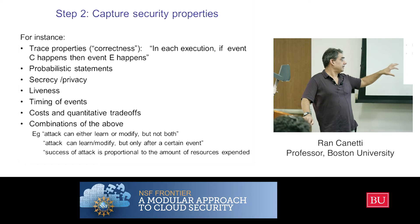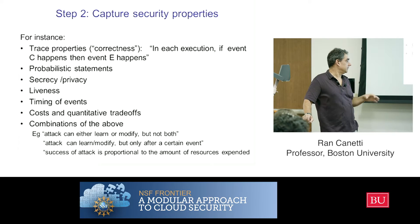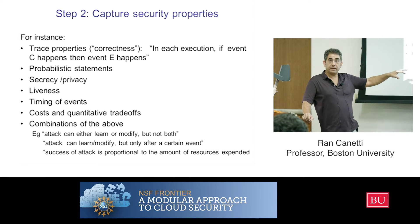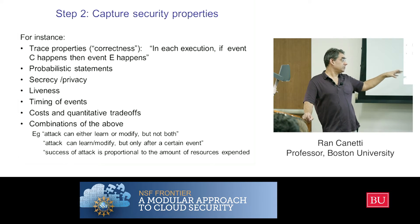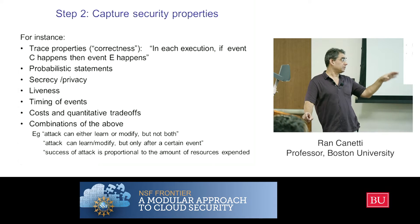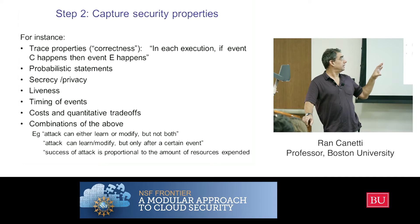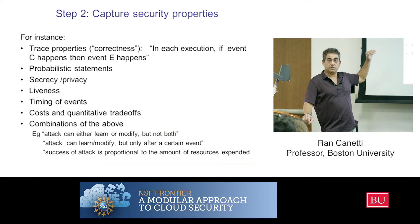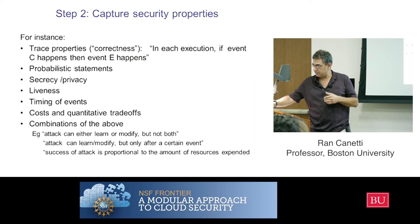For example, an attacker can either learn some piece of information or modify another piece of information, but not both. Or an attacker can learn and modify, but only after committing to its input. We also want to capture things like the success of an attack, or the amount learned, or the probability of modification, being proportional to the amount of resources invested. It's not clear how to do all this with a simple list of properties, so instead we'll do something else, as we'll see in a minute.